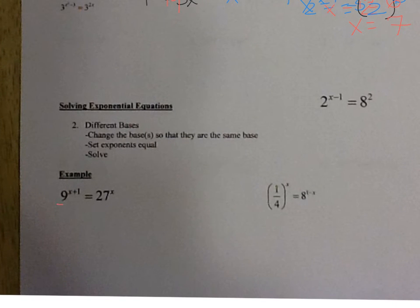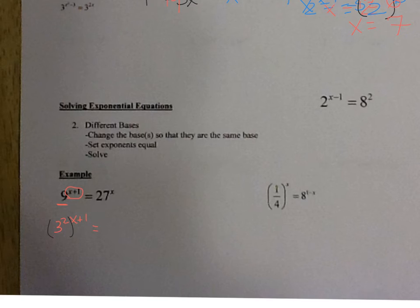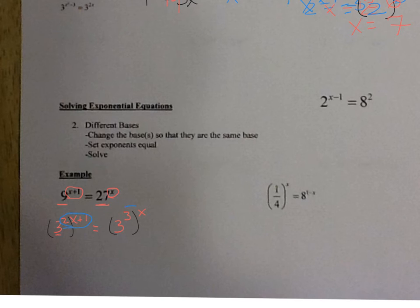It's easier to work with the smaller number first. Another way to write 9 is 3 to the 2nd power, and I have to raise it to the x plus 1 power. For 27, a way to write it with a base of 3 is 3 to the 3rd, and then raise that to the x power. Power to a power means you multiply: that becomes 3 to the 3x. Over here, make sure you distribute the 2 — that's a common mistake kids forget. So this becomes 3 to the 2x plus 2.